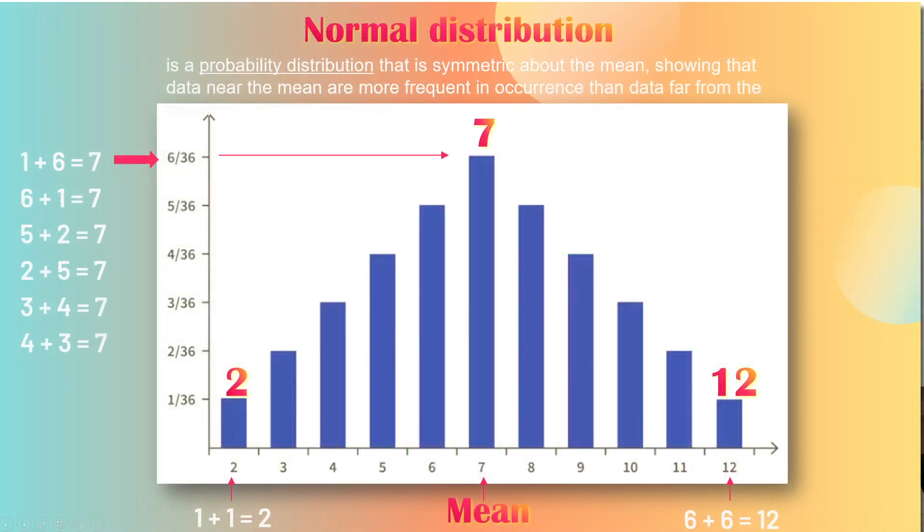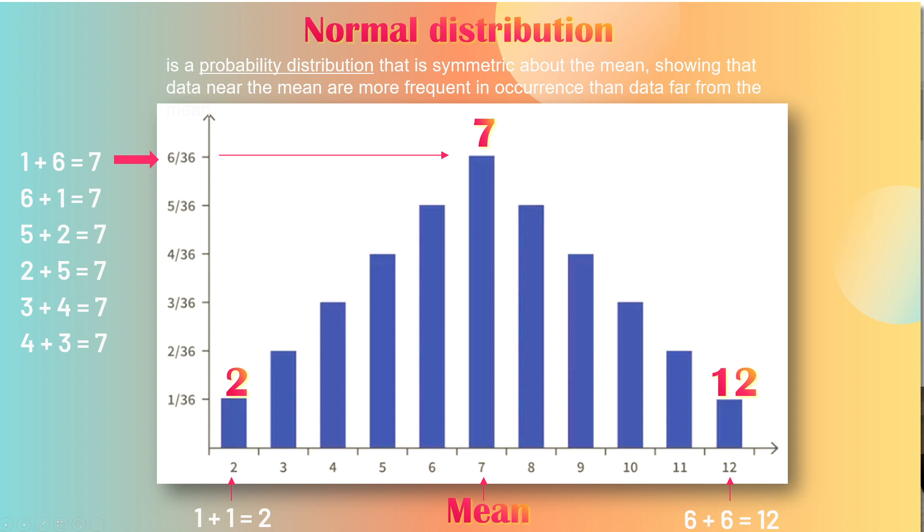2 and 12, on the other hand, are far less likely.